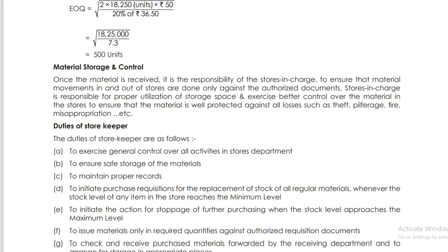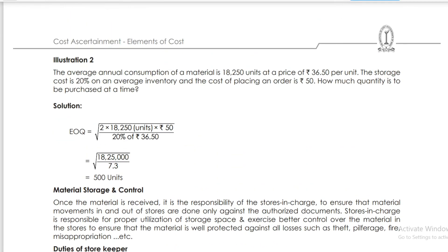Illustration 2: The average annual consumption of material is 18,250 units at a price of Rs. 36.50 per unit. The storage cost is 20% on average inventory and the cost of placing an order is Rs. 50. How much quantity is to be ordered? Annual consumption = 18,250 units, price = Rs. 36.50 per unit, storage cost = 20%, ordering cost = Rs. 50.